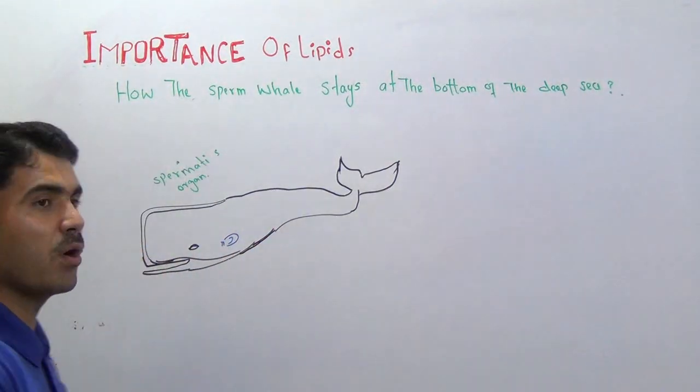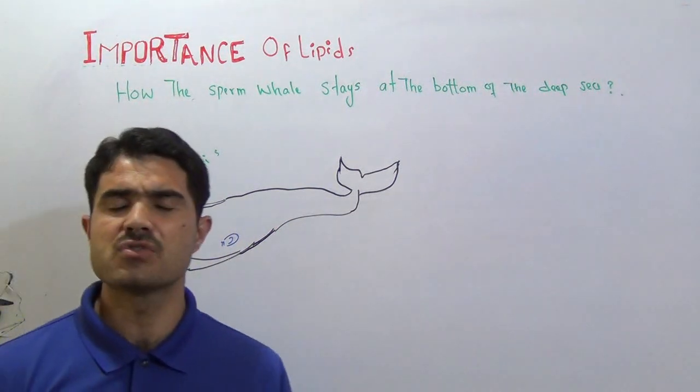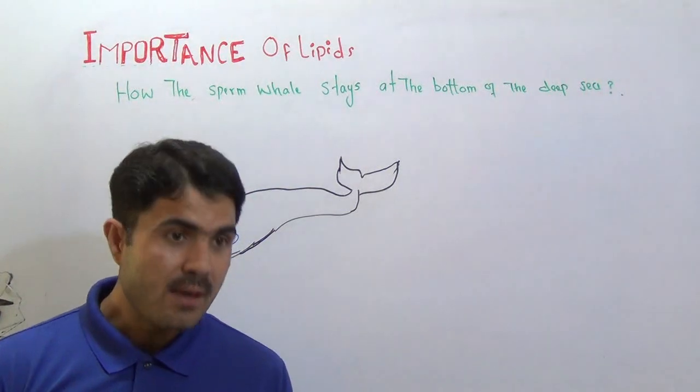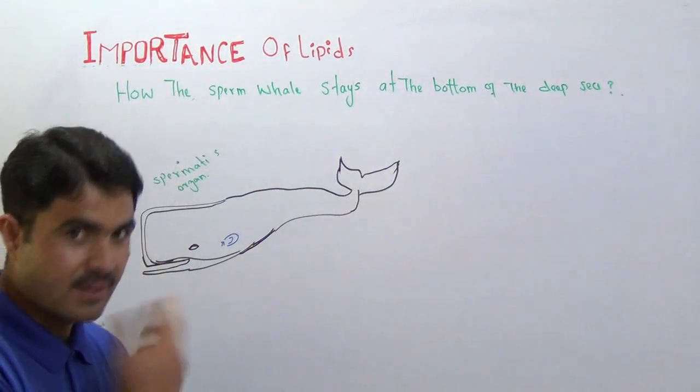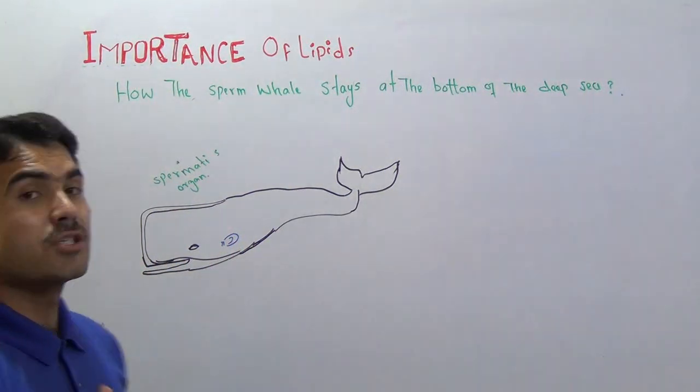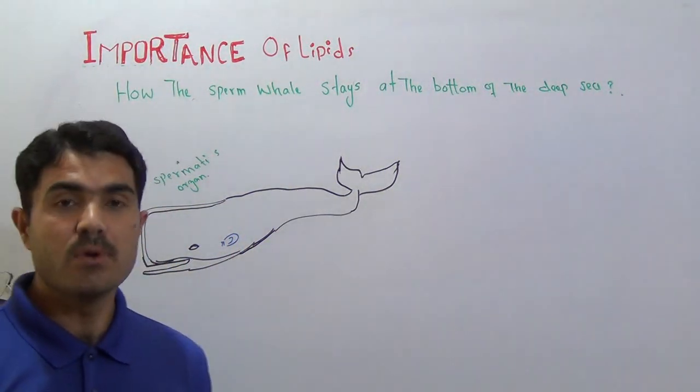That is the diagram of the whale. You might have seen different whales. Among them, one of them has such a beautiful shape like this and the name of this is sperm whale.